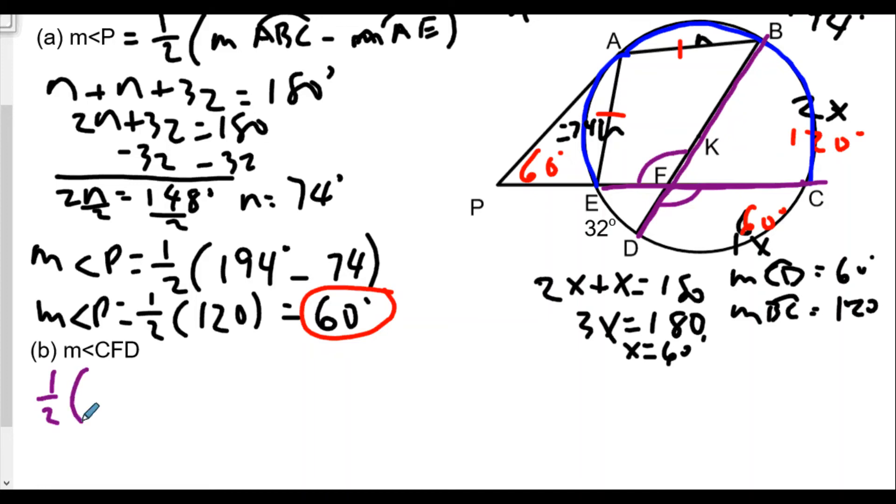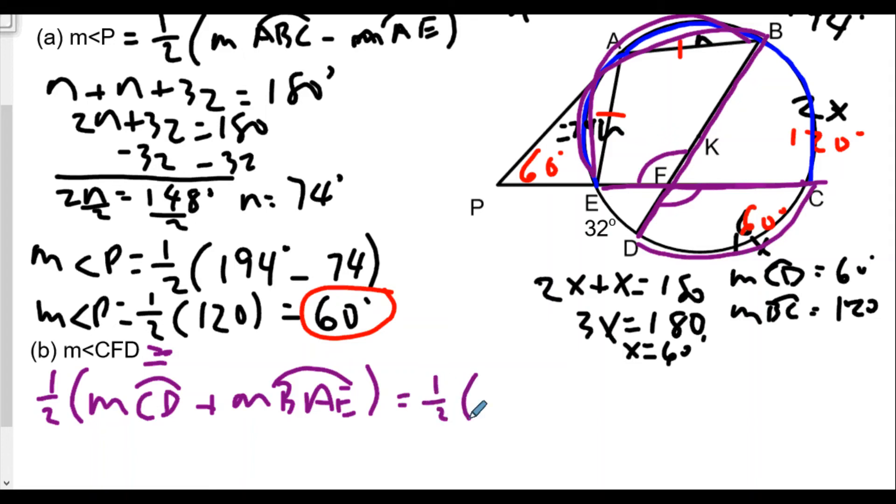This angle CFD and angle BFE must be congruent because vertical angles are congruent. The measure of an angle formed when two chords intersect is equal to one half the sum of the arcs intercepted. Our first arc is arc CD, so this equals one half the measure of arc CD plus the other arc, arc BAE.